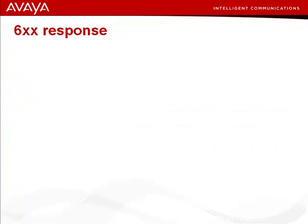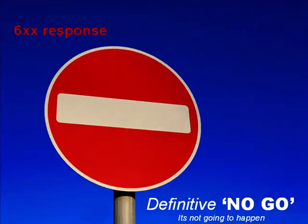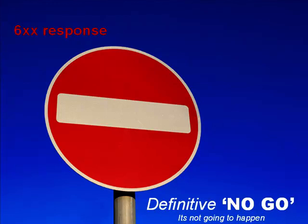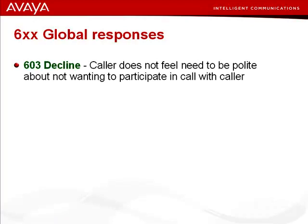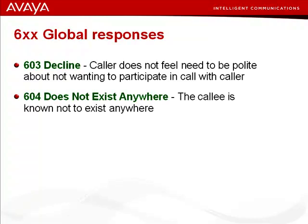Let's deal with the last family — the 600 family. A 600 response simply means that the request is definitely not going to be successful — no matter what variations the caller tries, it's a no-go. The 603 Decline is a way of rejecting the INVITE without feeling the need to be polite — without hiding the rejection behind a 486. Another one, the 604 Does Not Exist Anywhere, is returned when a SIP device knows for sure that the address does not exist. So now we've been formally introduced to all of the response families — the key thing is to know the family name and the family characteristics.